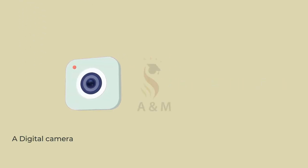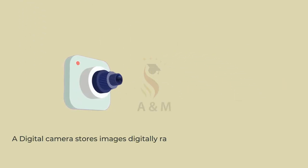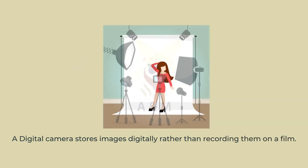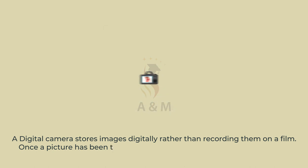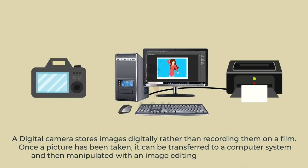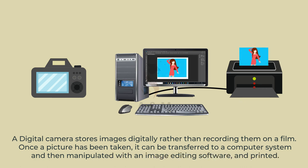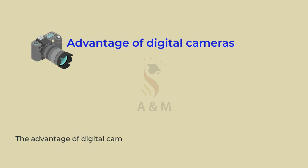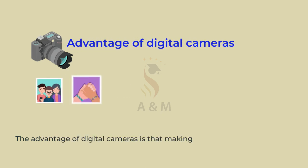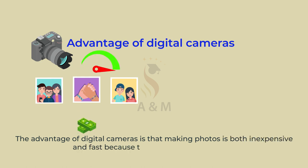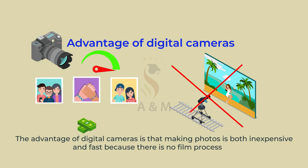A digital camera stores images digitally rather than recording them on a film. Once a picture has been taken, it can be transferred to a computer system and then manipulated with an image editing software and printed. The advantage of digital cameras is that making photos is both inexpensive and fast because there is no film processing.